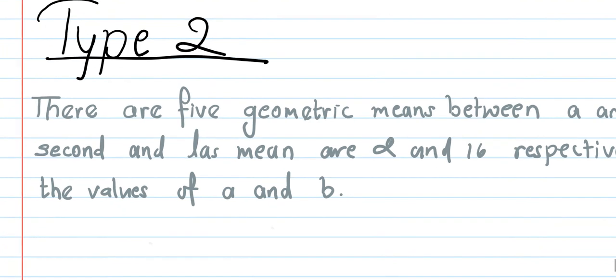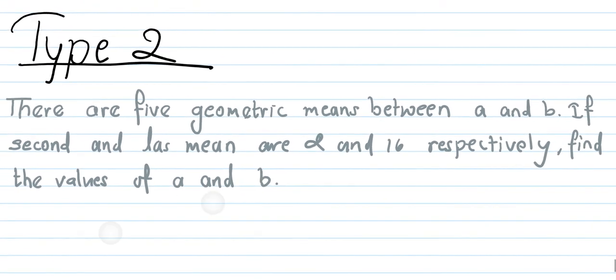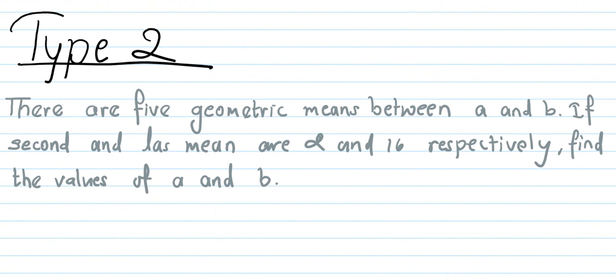Type 2 question: there are five geometric means between a and b. The geometric means are inserted between a and b. If the second and last means are 2 and 16 respectively — so second mean equals 2 and last mean equals 16 — then find the values of a and b.